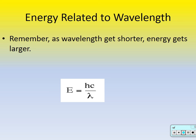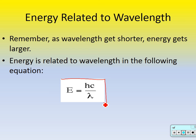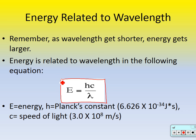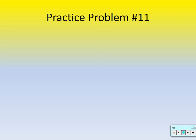Energy is also related to wavelength with a different equation. Remember: as wavelength gets shorter, energy gets larger. Energy equals H times C divided by lambda. E is energy, H is Planck's constant, C is speed of light, and lambda is wavelength. If wavelength gets larger, energy gets smaller because you're dividing by a larger number.